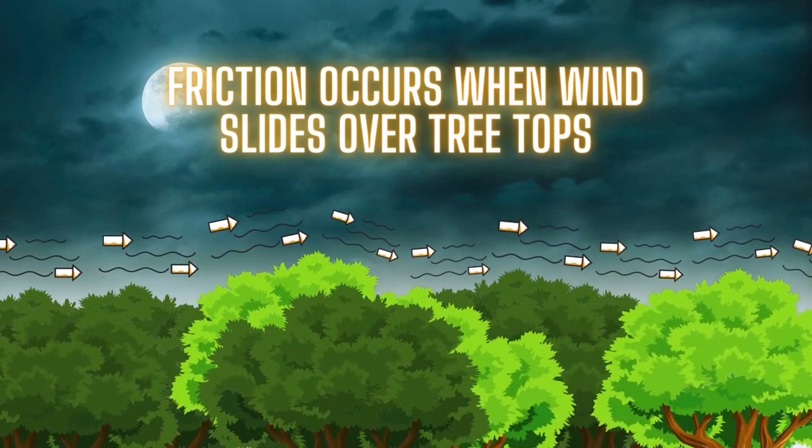The first is friction. Friction occurs when one object slides over another object. For example, when stronger winds blow over treetops, friction is created.